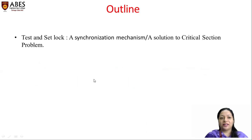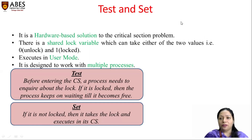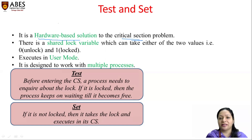The outline of today's lecture will be the Test and Set Lock Mechanism, which is a synchronization mechanism to ensure that when multiple processes are concurrently executing in their critical section, they must be synchronized. It is also one of the solutions for the critical section problem. Test and Set is a hardware-based solution, whereas in the previous lecture we discussed the Peterson solution, which was the software-based solution.